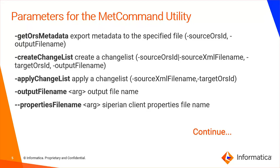The next parameter is create change list. This command compares the source and target ORS and identifies the differences, then creates a change list based on those differences. You need to pass the source ORS ID or an exported change list as the source XML file, and you also need to pass the target ORS ID along with an output file name, where the differences between source and target will be saved.